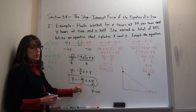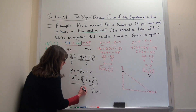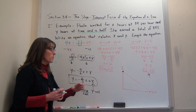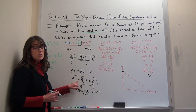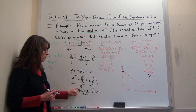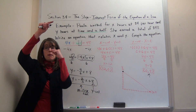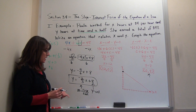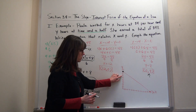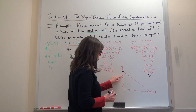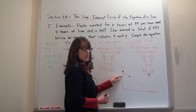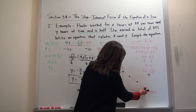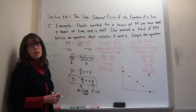Also notice this -2/3 — that's the slope, which is rise over run. It's a counting tool that gets you from one point on the graph to every other point. Putting the negative on the numerator means the rise is -2, so go down 2, and the run is positive 3, so go right 3. That generates all the other points on the line.